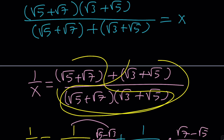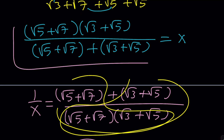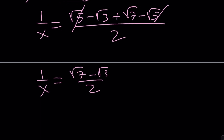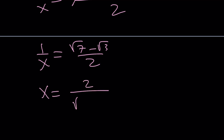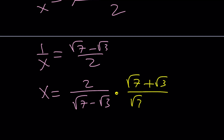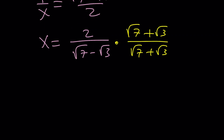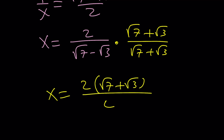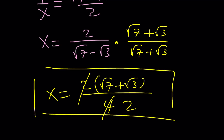But wait — we were not looking for 1 over x, we were looking for x. Flipping it gives 2 over root 7 minus root 3. We have to use conjugates again: multiply by root 7 plus root 3, giving x equals 2 times root 7 plus root 3, and 7 minus 3 equals 4, so 2 goes into 4 twice. And we're done — this brings us to the end of the video. Thank you for watching. Please comment, like, and subscribe. Until then, be safe, take care, and bye-bye.